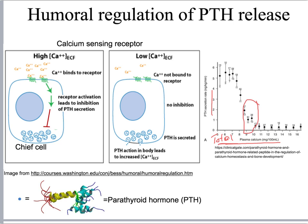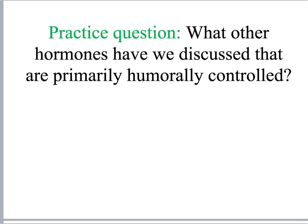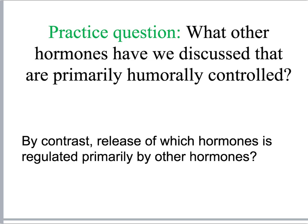When calcium levels drop, there is more parathyroid hormone secretion, which increases absorption of calcium from urine and in the intestine and releases more calcium from bone. Can you think of other hormones that are primarily humorally controlled? One example is insulin — pancreatic beta cells directly sense glucose concentration in the blood and release more insulin when the concentration gets too high.